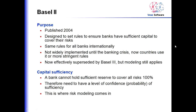What was Basel II? The purpose of Basel II, published in 2004, was to set rules that would ensure that banks have sufficient capital to cover their risks. In recent years we've figured out that didn't work, but the idea was that the same rule would essentially apply for all banks internationally so that no bank would have a competitive advantage by holding insufficient capital reserves. It wasn't widely implemented until the banking crisis, but now countries use it more, or apply individually more stringent rules — in the United States, for example. Basel II is now effectively superseded by Basel III, but the modeling I'm going to be talking about still applies.